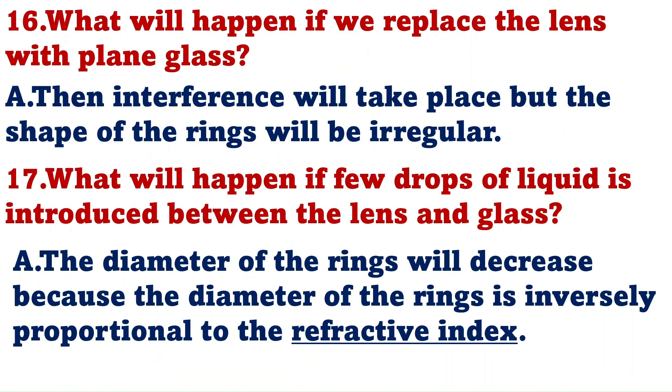What will happen if we replace the lens with plane glass? Then the interference will take place but the shape of the rings will be irregular. What will happen if few drops of liquid are introduced between the lens and glass? The diameter of the rings will decrease because the diameter of the ring is inversely proportional to the refractive index.